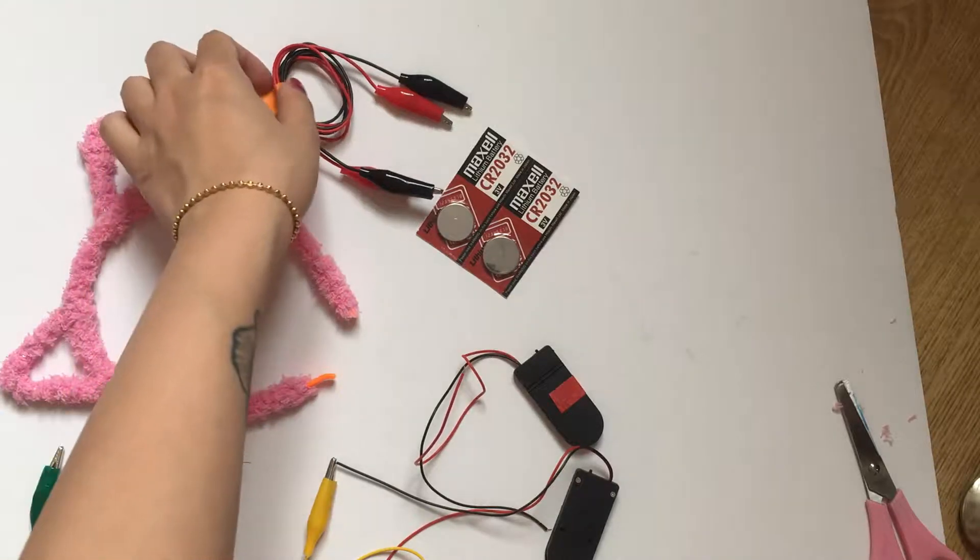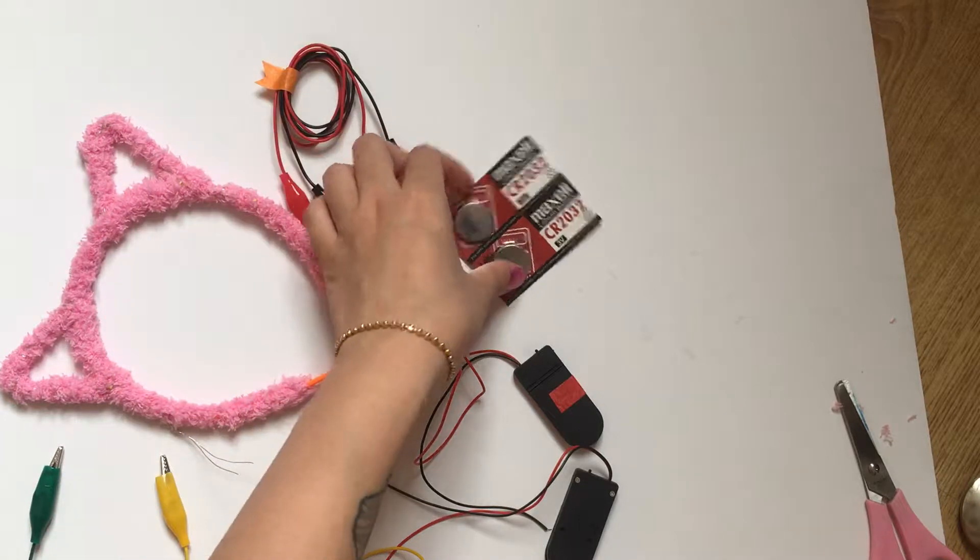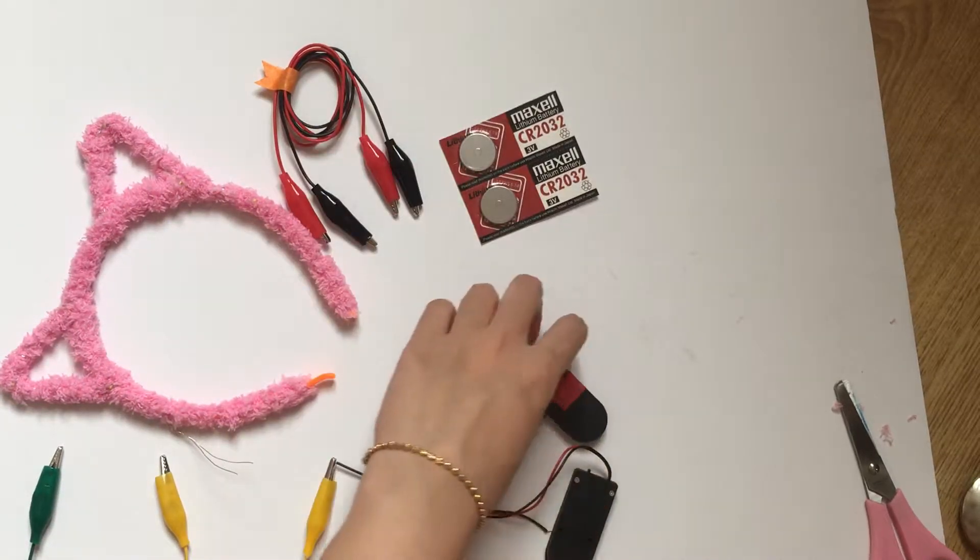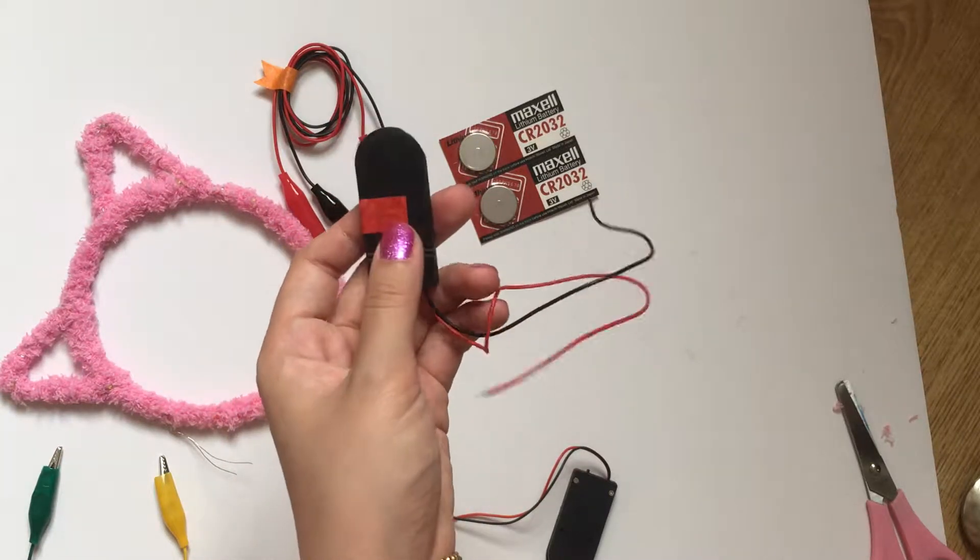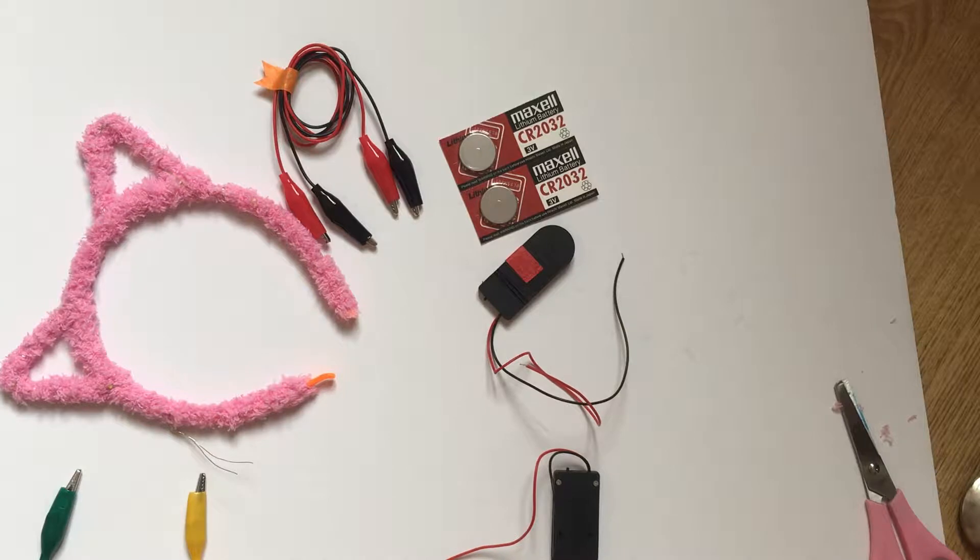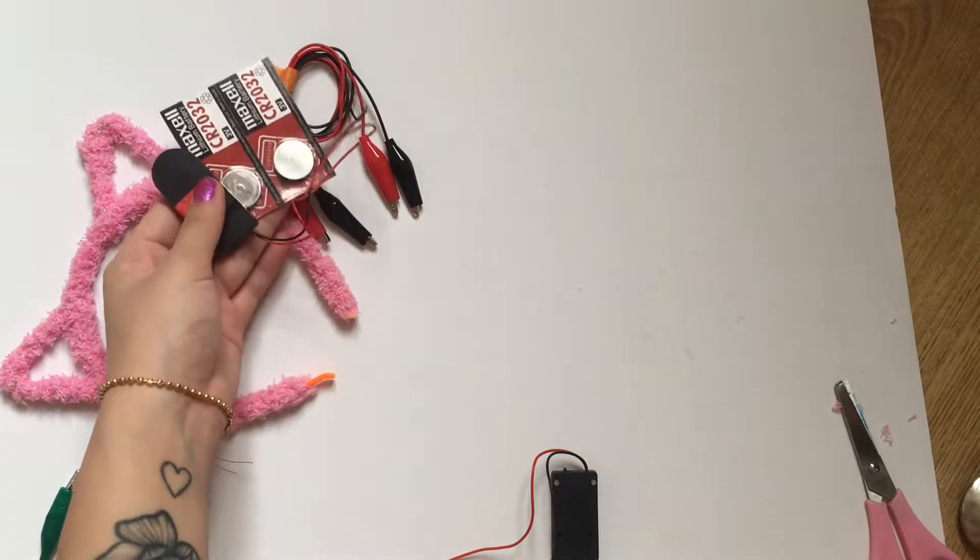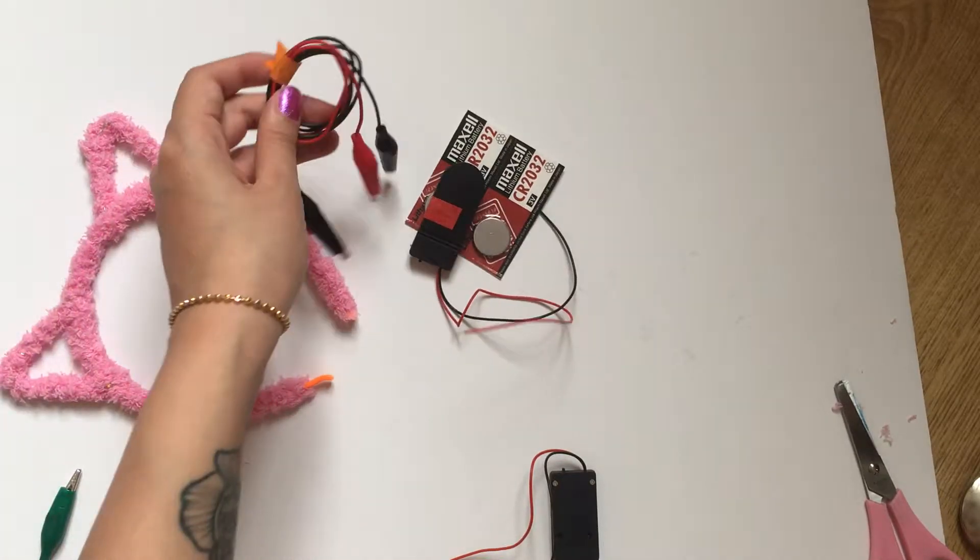In your soldering kit, you will have a pair of crocodile clips, a pair of CR2032 coin cell batteries, and a coin cell battery holder color coded in red. These items will help you to identify the negative and positive terminals of your LED string, as well as power it.